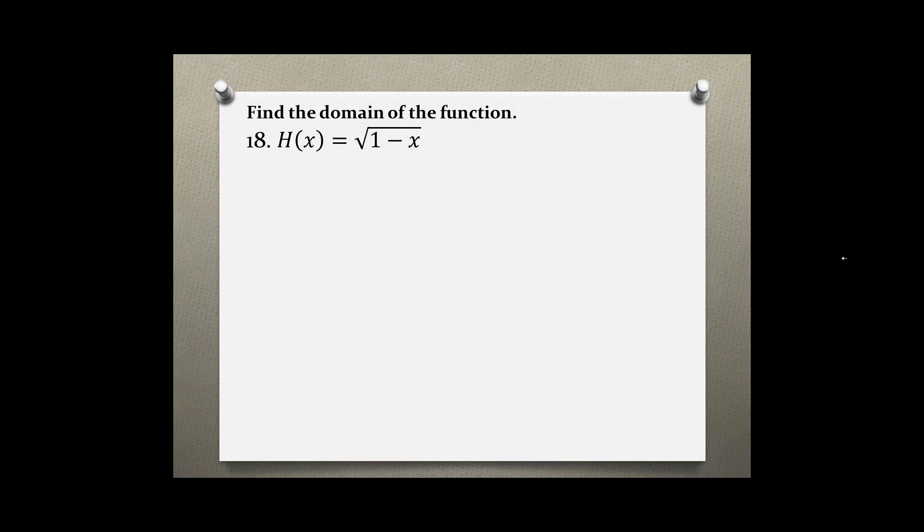Find the domain of the function. Problem 18: h(x) equals the square root of 1 minus x. This is a radical function, so when dealing with radical functions, we have to take the expression under the radical and set it greater than or equal to zero. Before we do that, let's first look at the graph.